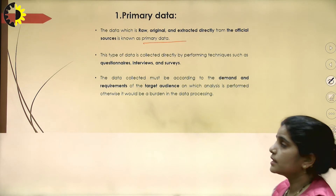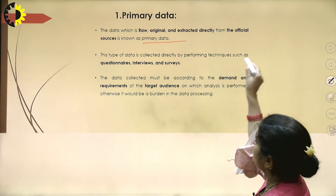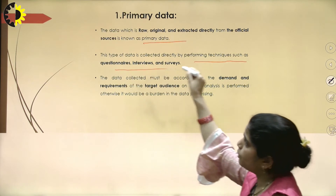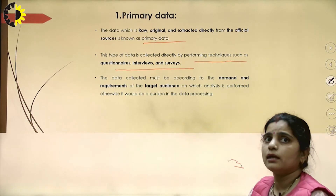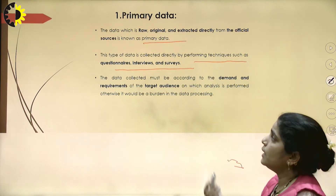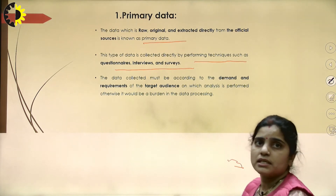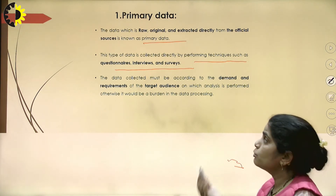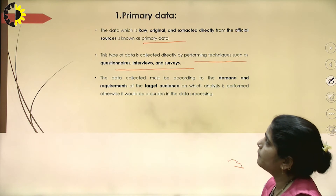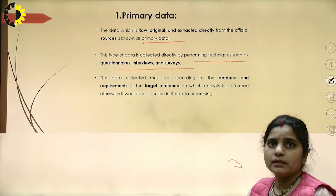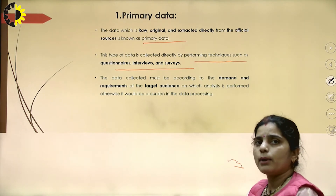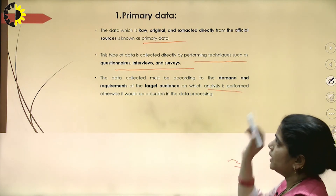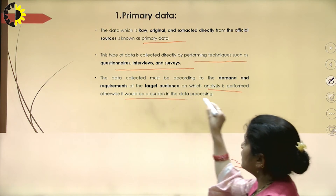Primary data is collected directly by performing some techniques. These methods include questionnaires, interviews, surveys, and the experimental method. The data collected must be according to the demand and requirements of the target audience on which we perform the analysis; otherwise, it becomes a burden in the data processing.